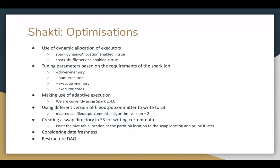Let us talk about the optimizations we have made in our Shakti application. The most important optimization is the use of dynamic allocation, which is provided by Apache Spark to spin up more or fewer executors depending upon usage as well as availability in the cluster. We tune the parameters based on the requirements of the Spark job — driver memory, number of executors, executor memory, and how many tasks we want to run on each executor, all different for different Spark jobs. We make use of adaptive execution to handle any skewness in data processing. Since we are writing to S3, we use a different version of the file output committer — algorithm version 2, which is better suited for S3 storage.